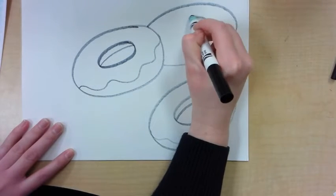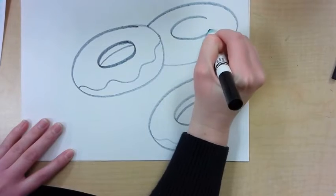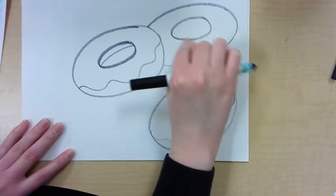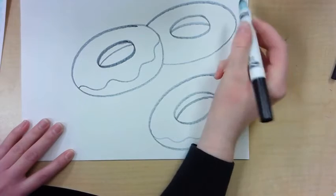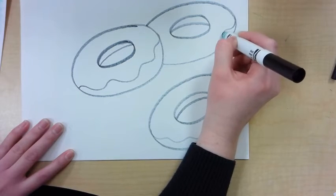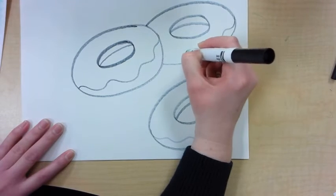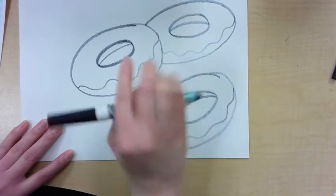And then the same details. Add another oval, like the hole of the doughnut. Make your little curve, your moon shape. And then your wavy line. And that's going to stop right here.